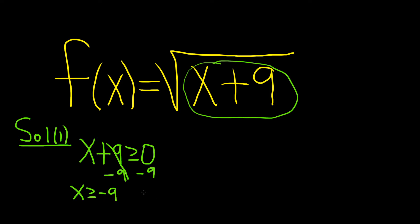And from here you can get the answer. You can draw a picture if you like. So here's negative 9. We're looking for all of the numbers that are bigger than negative 9. So they'd be over here on the number line. And because we have an equal to part in our inequality, we include the negative 9.